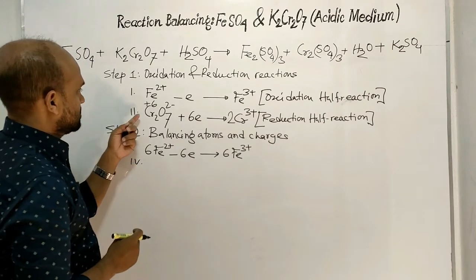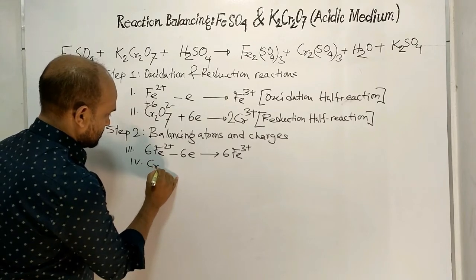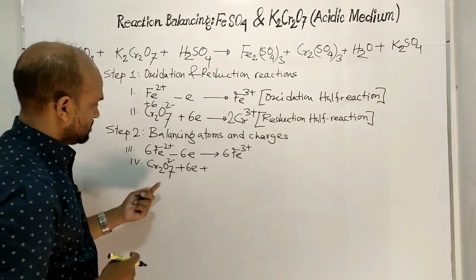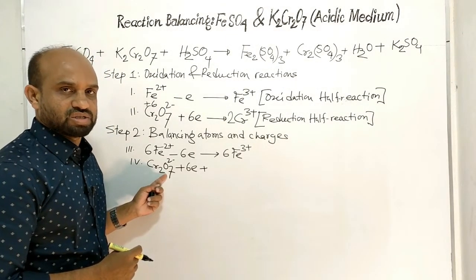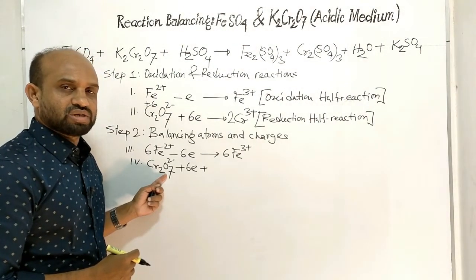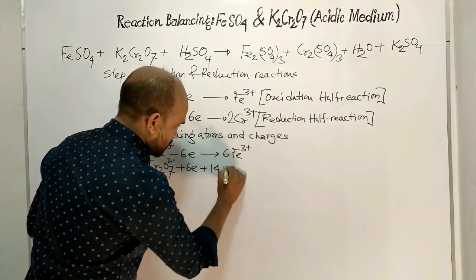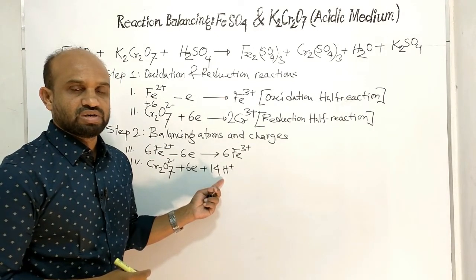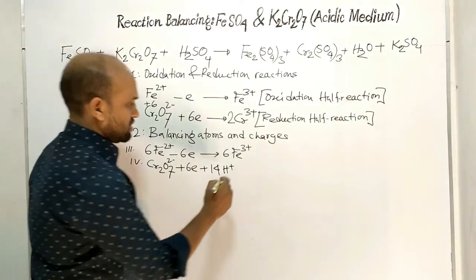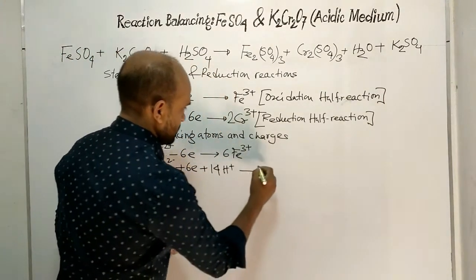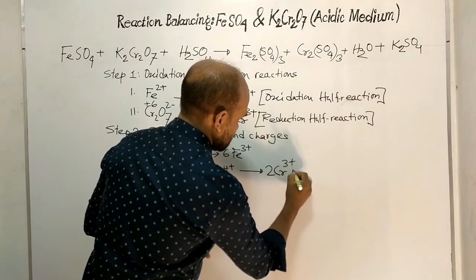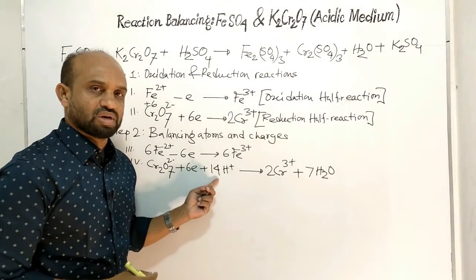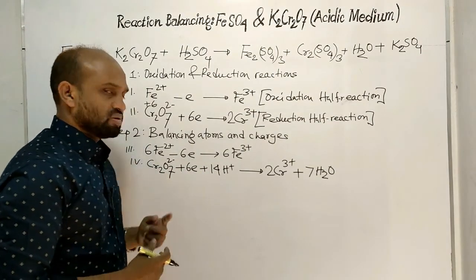Equation number 4 is the reduction half reaction: Cr₂O₇²⁻ plus 6 electrons. There are 7 oxygen atoms, and to form water with these 7 oxygen atoms we need 14 protons. Because this reaction is occurring in acidic medium, there is a supply of protons. So we can write: Cr₂O₇²⁻ + 6e⁻ + 14H⁺ → 2 Cr³⁺ + 7H₂O. This completes step 2.